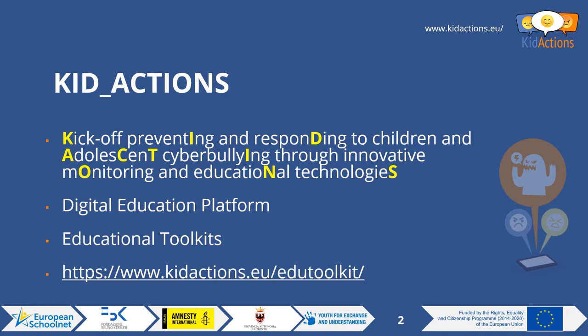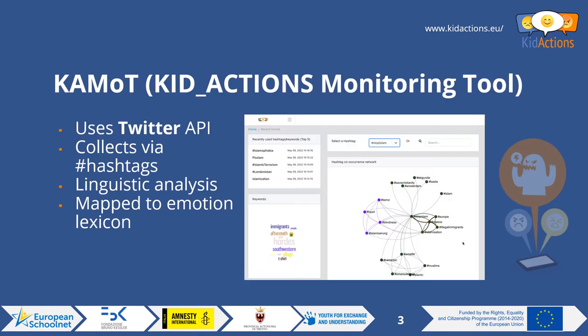Before diving into the educational toolkit activities, it's important to understand the digital education tools being developed in the KID Actions project. The first of these tools is CAMOT, the KID Actions monitoring tool. This is a tool aimed at educators to generate data for discussions with young people — it is not designed for young people to use directly. It uses the Twitter API, allowing you to analyze tweets, because Twitter is the only major public-facing open API social media platform; all others are locked behind privacy settings and data protection laws.